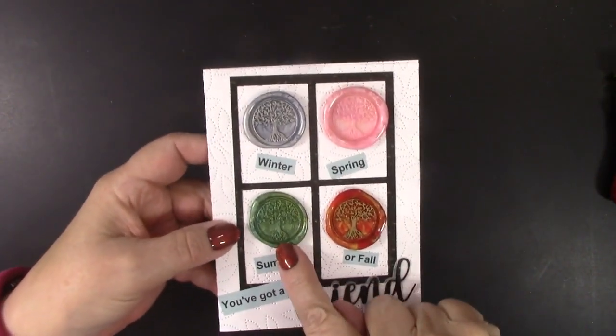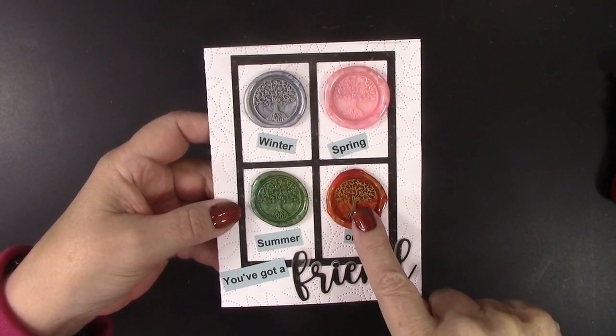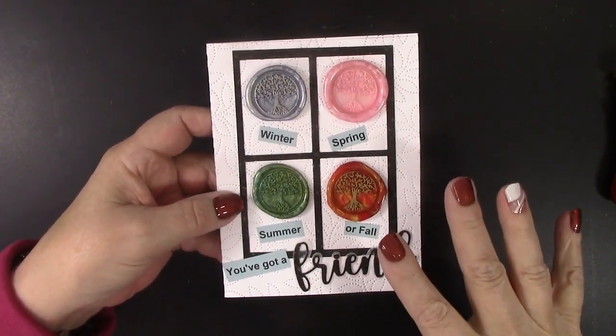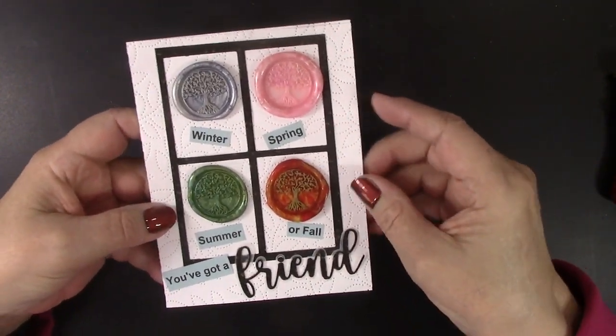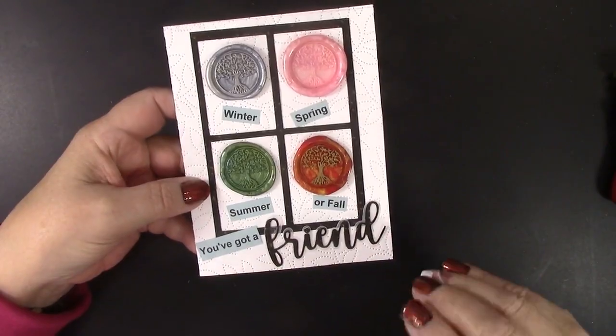I got this Pretty Tree Wax Die Stamp and decided to make four in different colors for each season for this card. So, winter, spring, summer, or fall, you've got a friend, just like the song.